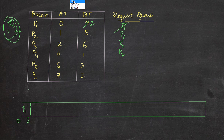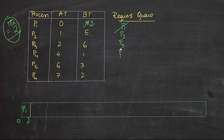We have to execute P1 again because it's not finished fully. Within 2 seconds, we queue the processes that have arrived in the CPU first, and then we queue the process that we're executing if it has some remaining burst time left. Since P1 has 2 seconds left, we are queuing it too. If it had 0 seconds left, we wouldn't be queuing it — only P2 and P3 would be queued in the request queue.